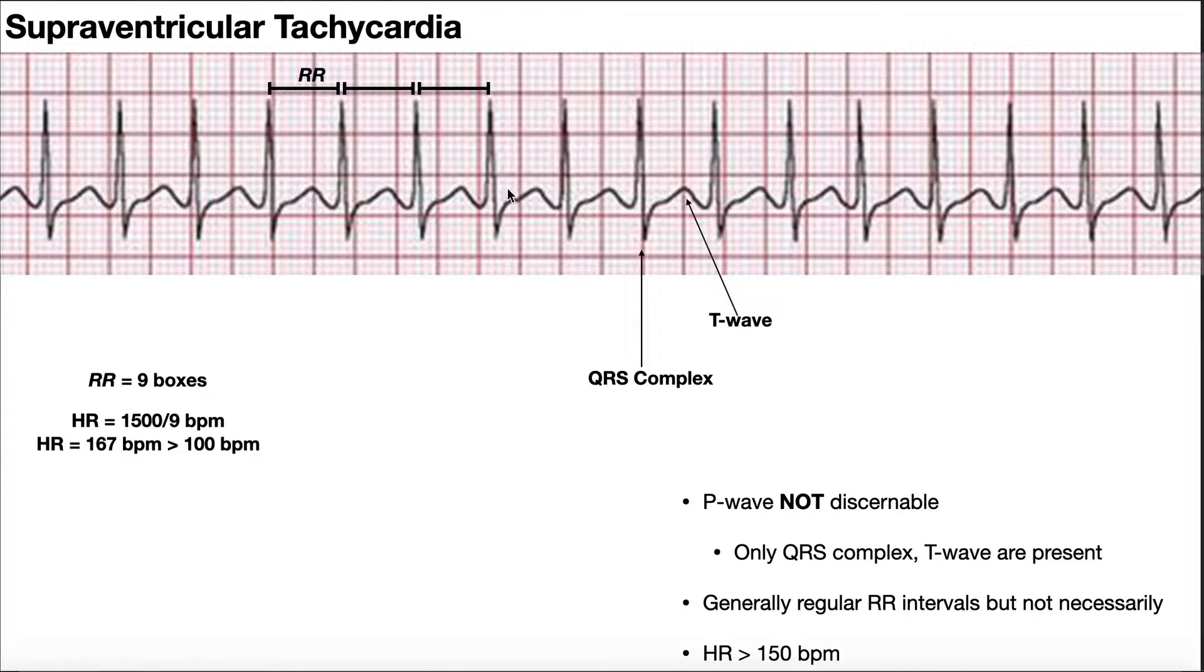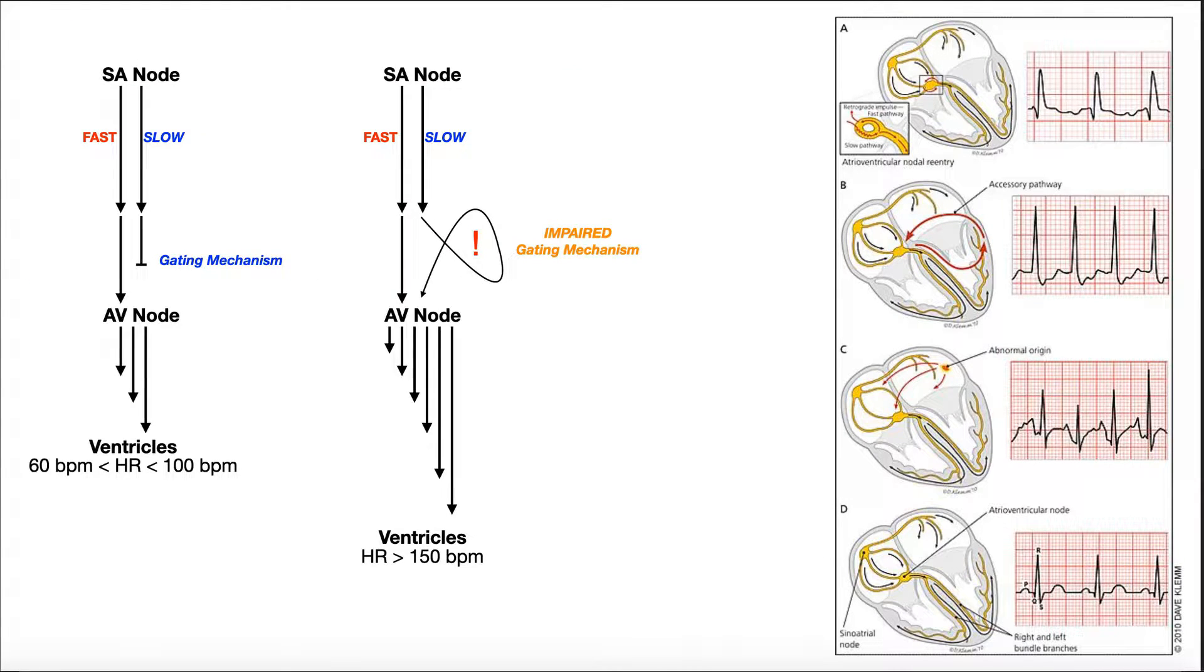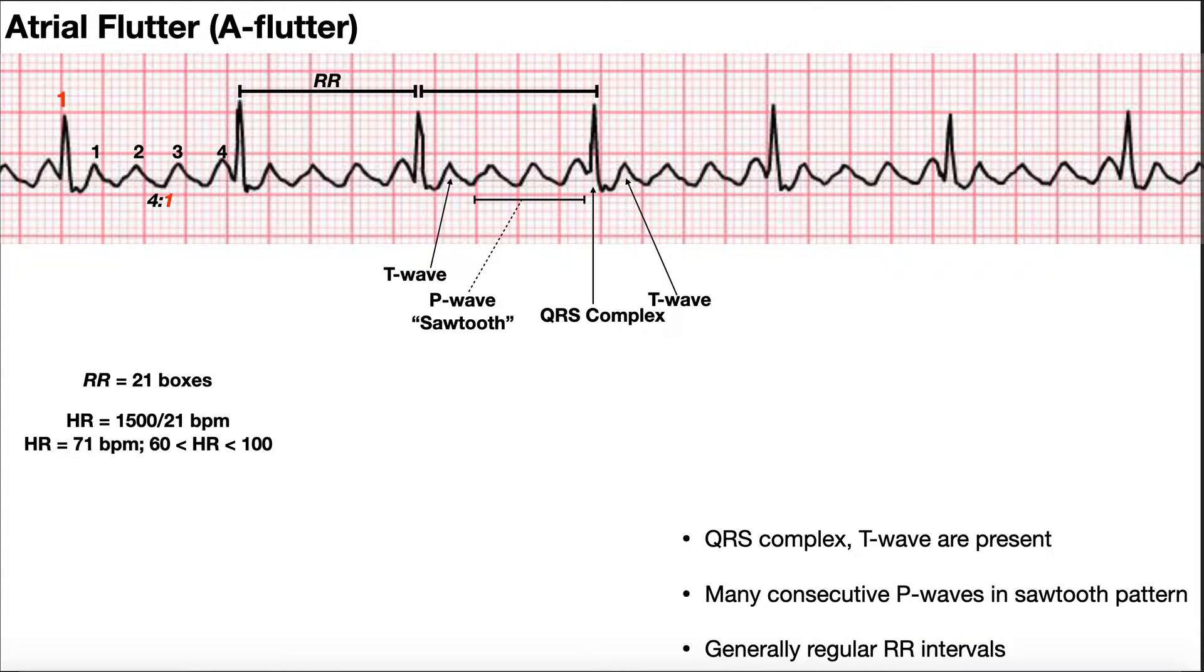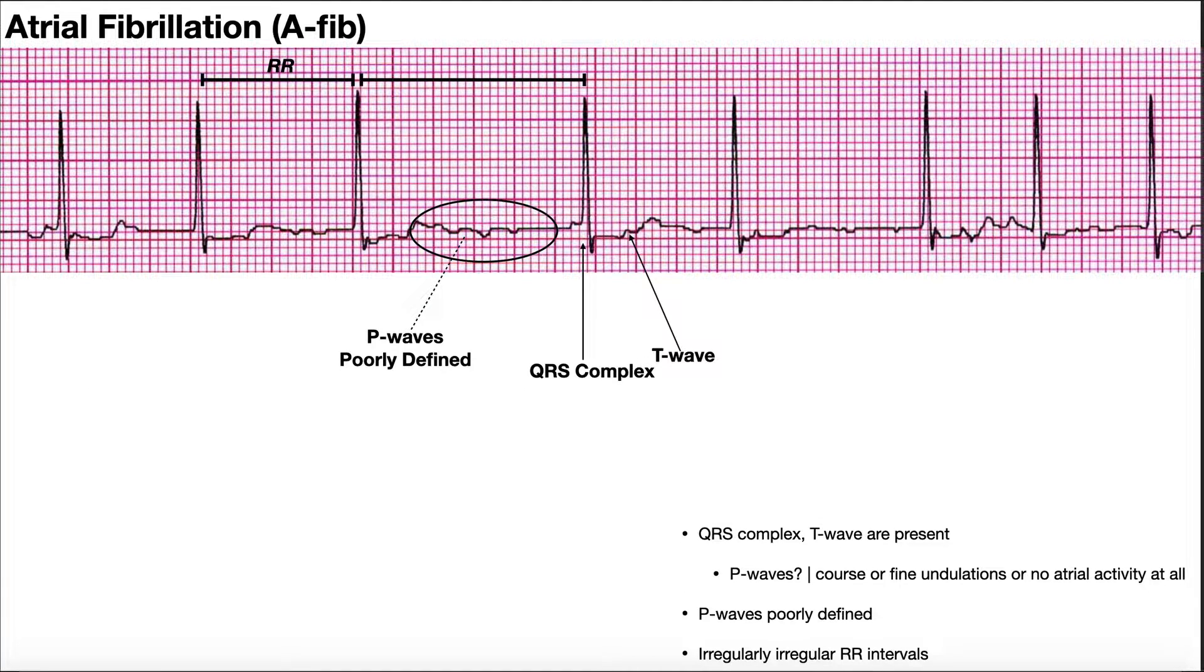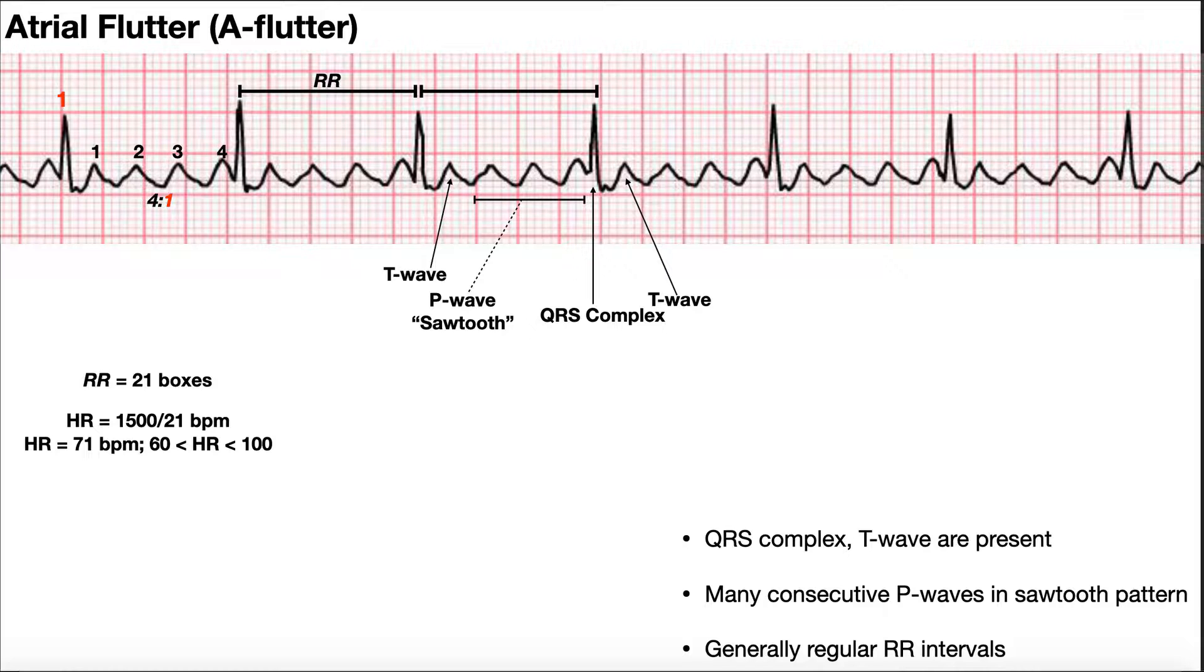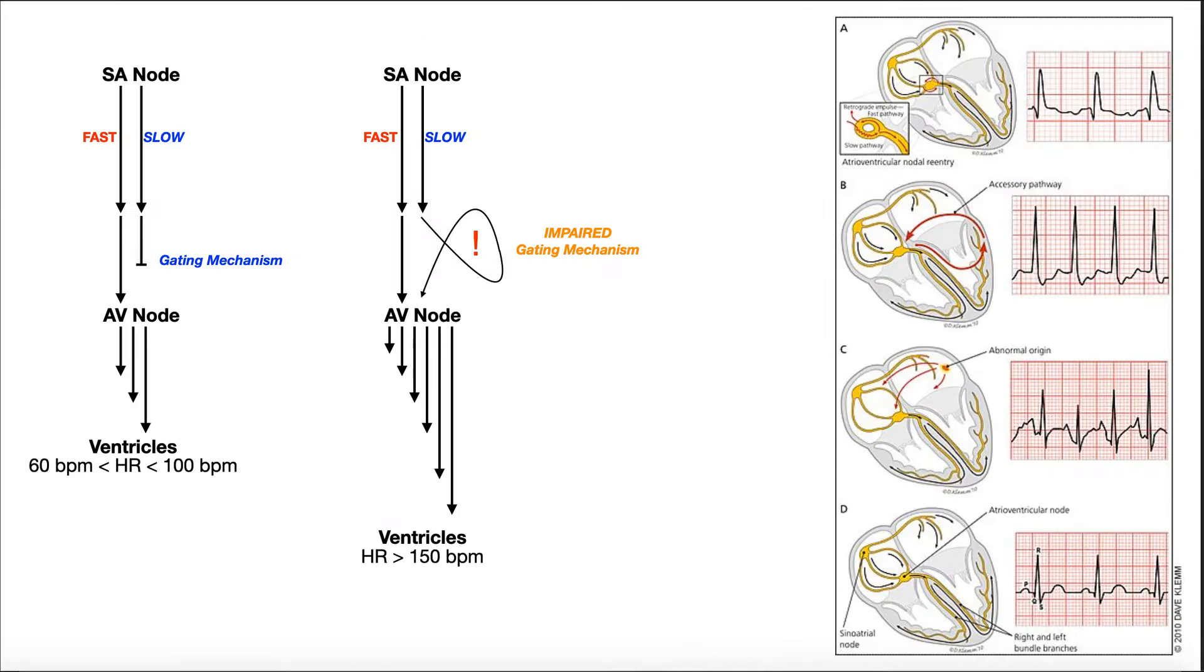We'll come back to the EKG in a few minutes, but let's talk about the mechanism of supraventricular tachycardias. As I mentioned, there are multiple kinds of supraventricular tachycardias, and actually atrial flutter and atrial fibrillation are two subtypes, but those are common enough to where we're going to be talking about those separately in the next video.